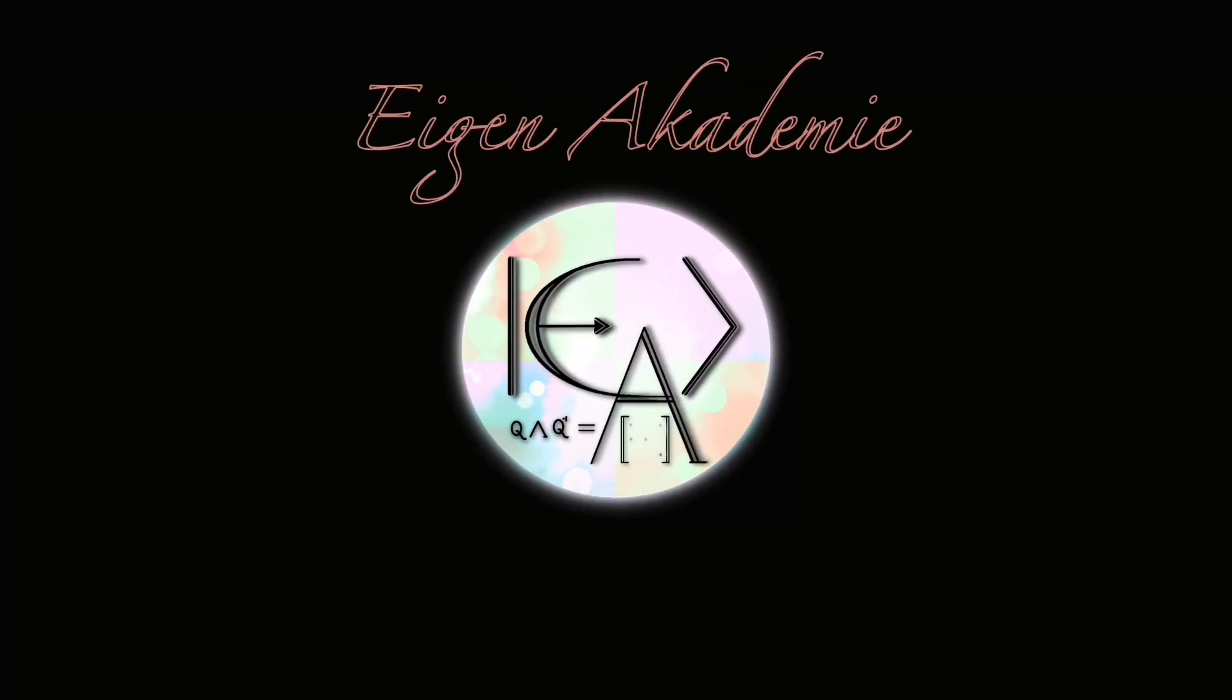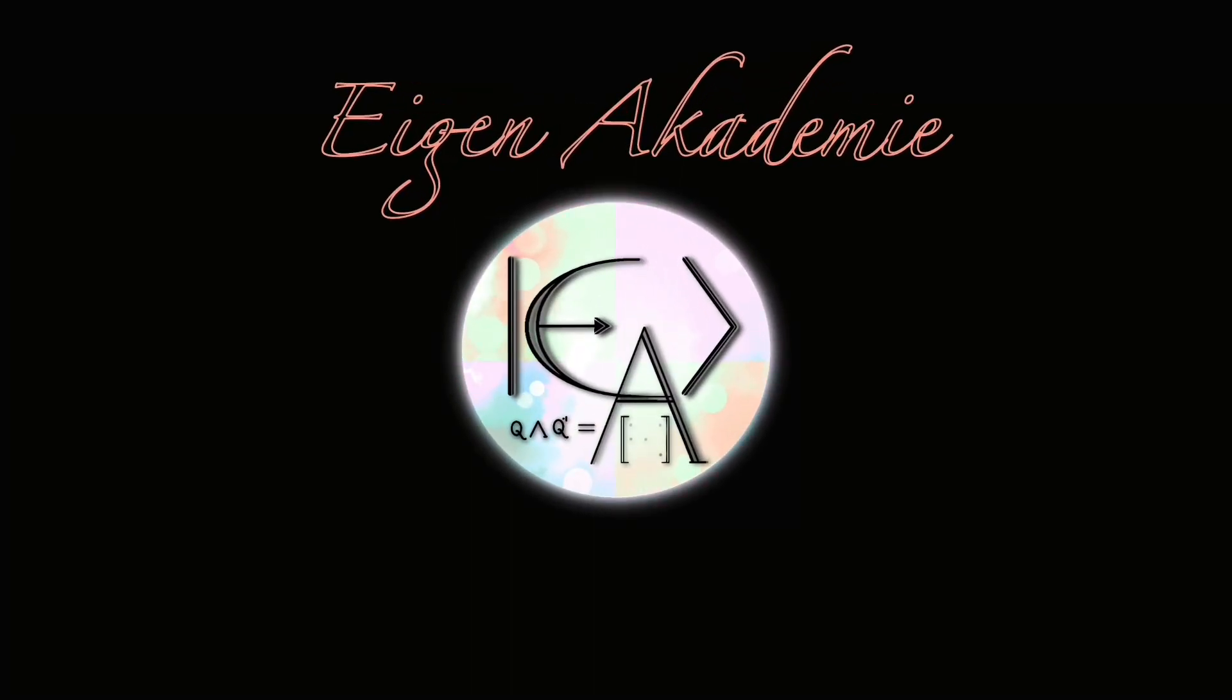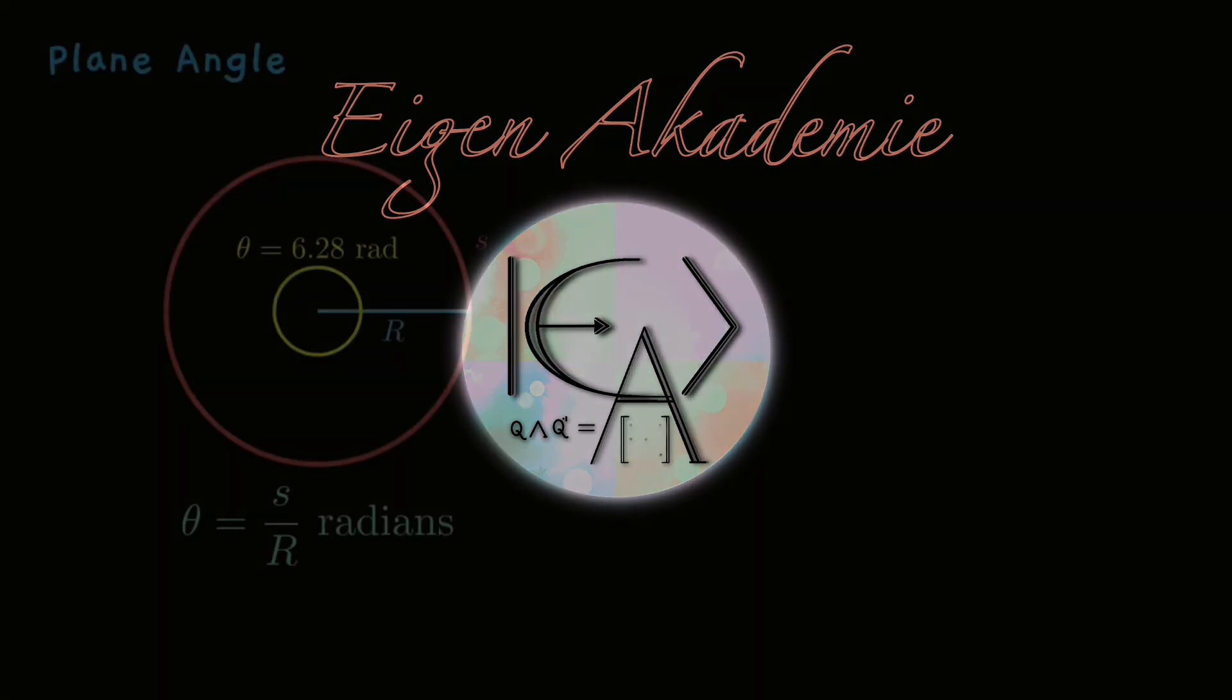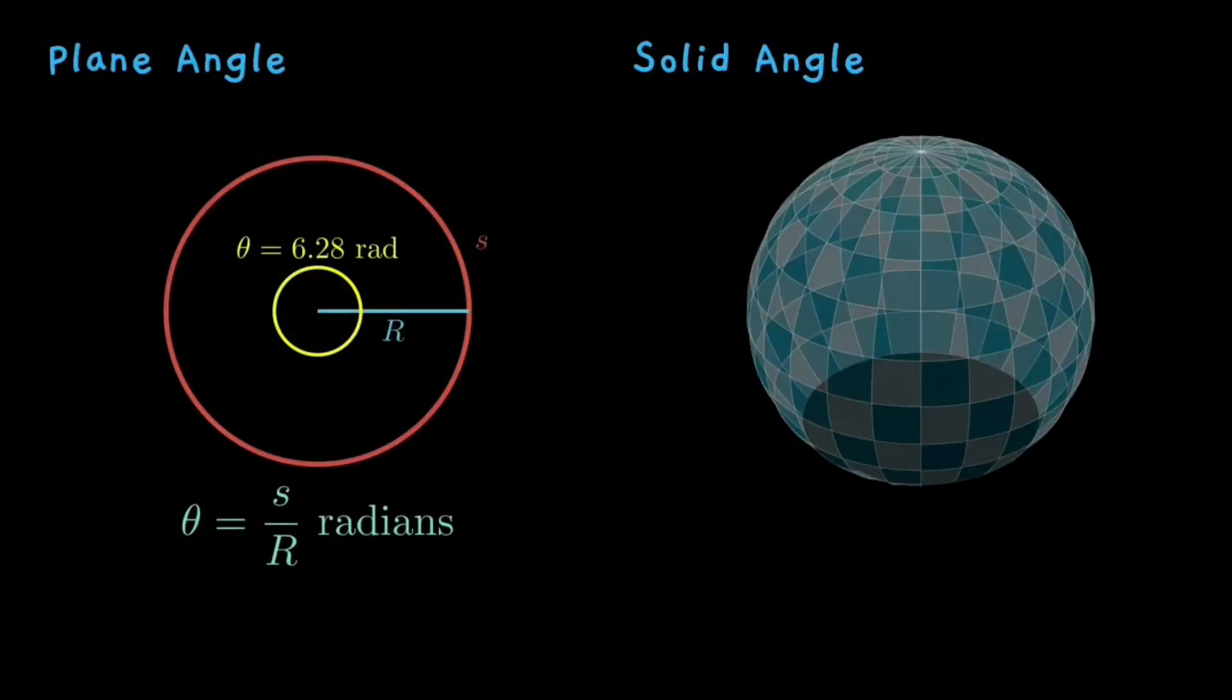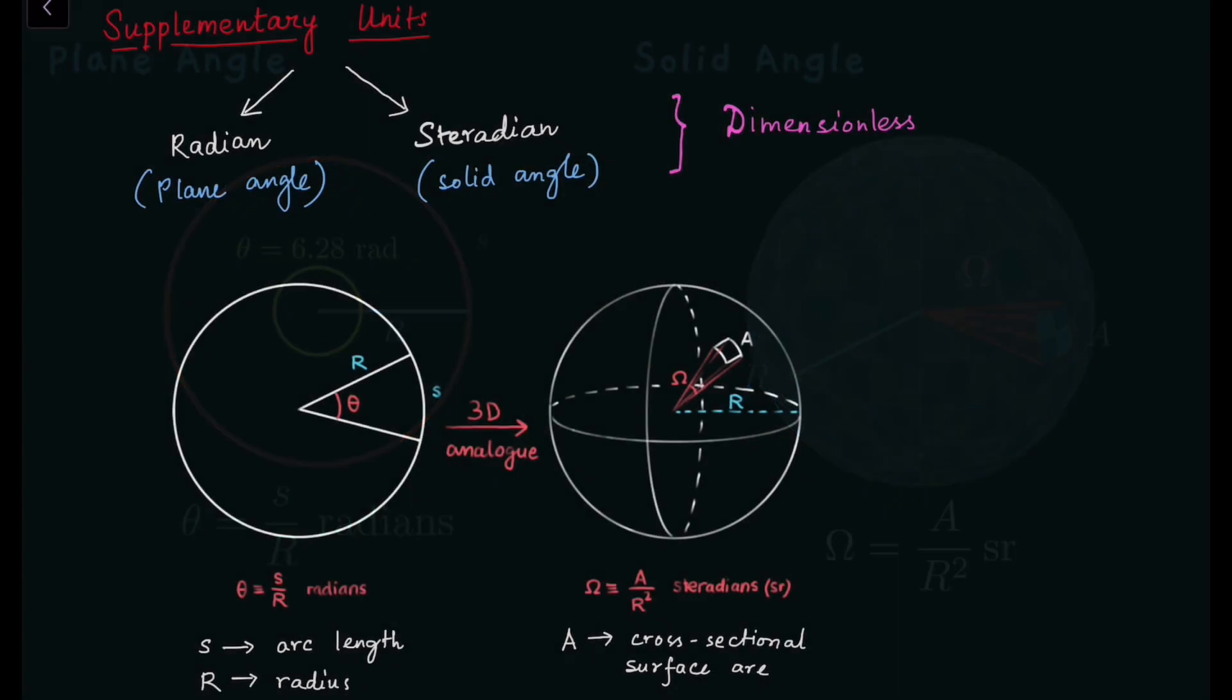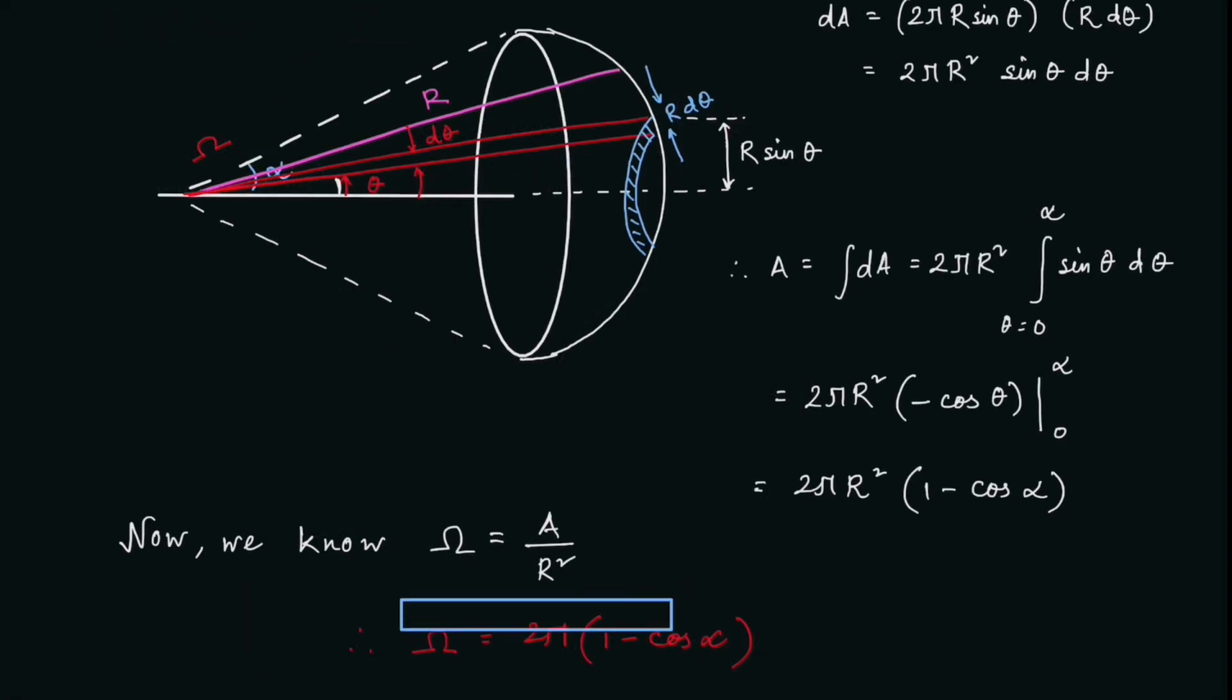In the previous video, while studying units, we introduced the idea of solid angle and how it captures the notion of angular spread in three dimensions. We also saw how the solid angle of a cone can be related to its half angle. But what if we need to compute the angle for a more general shape that is not as clean as the cap formed from the cone-sphere intersection? That is what we seek to explore today.